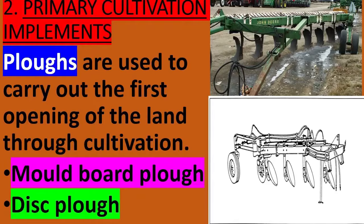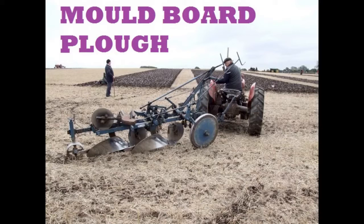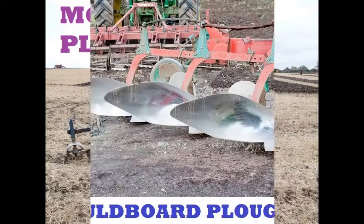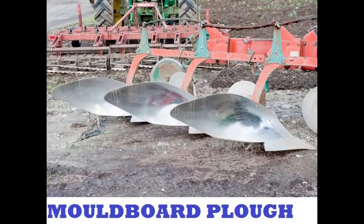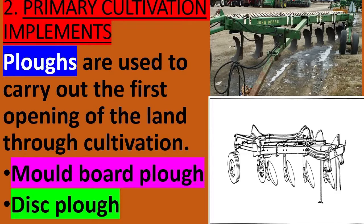2. Primary Cultivation Implements. Plows are used to carry out the first opening of the land through cultivation. Mold Board Plow. Disc Plow.